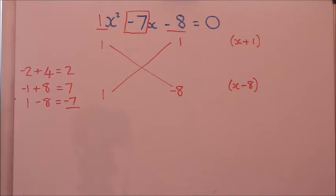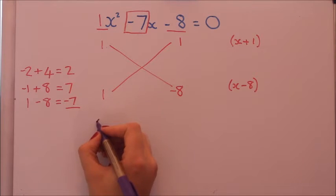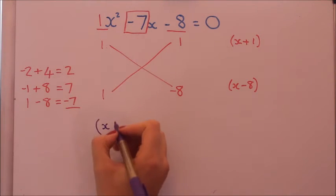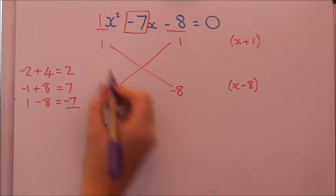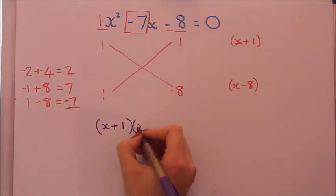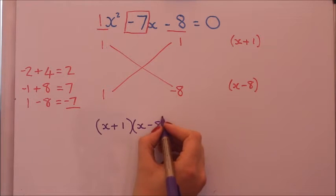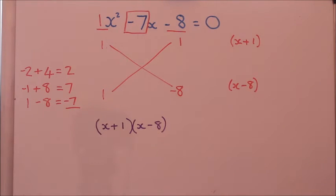Now of course there is a simpler way of doing these ones when there's no number in front of the x squared, but this method really comes into its own when there's a number in front of the x squared that's not one, because those ones are difficult to do.